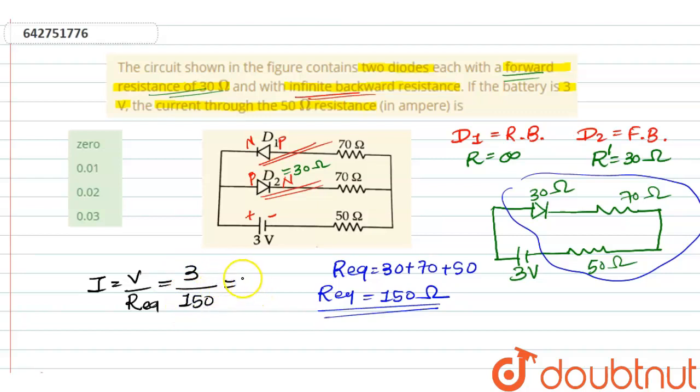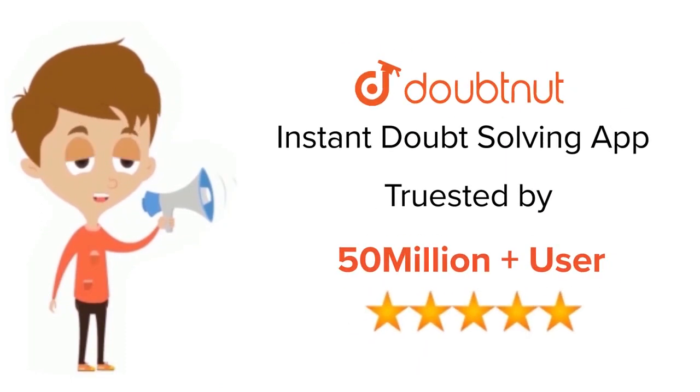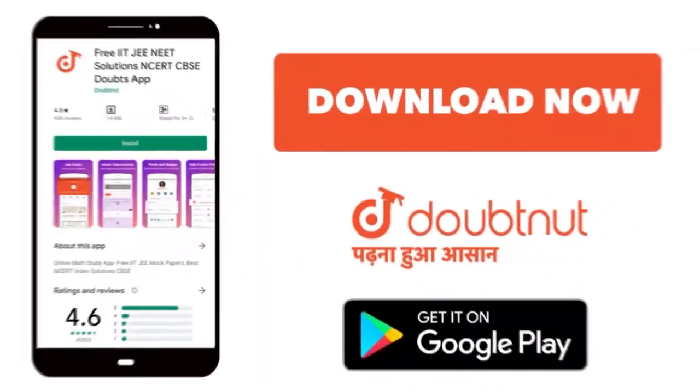So we will get 0.02 ampere. This will be our current, so our answer will be C. For class 6 to 12, IIT-JEE and NEET level, trusted by more than 5 crore students, download Doubtnet app today.